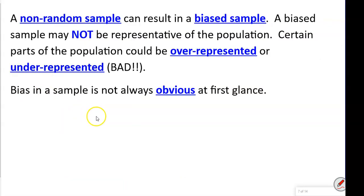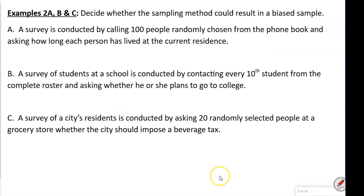A non-random sample can result in a biased sample. A biased sample may not be representative of the population — certain parts of the population could be overrepresented or underrepresented. Biases in a sample are not always obvious at first glance.